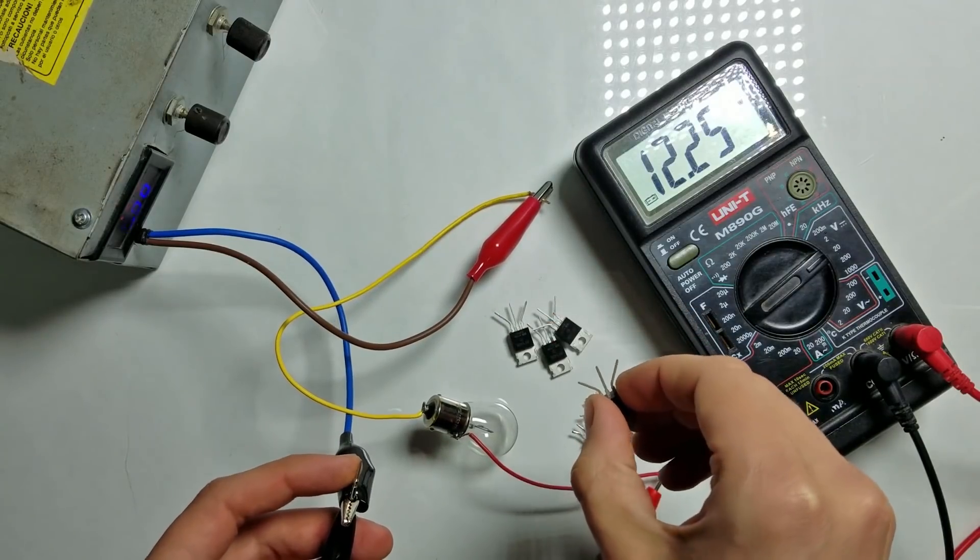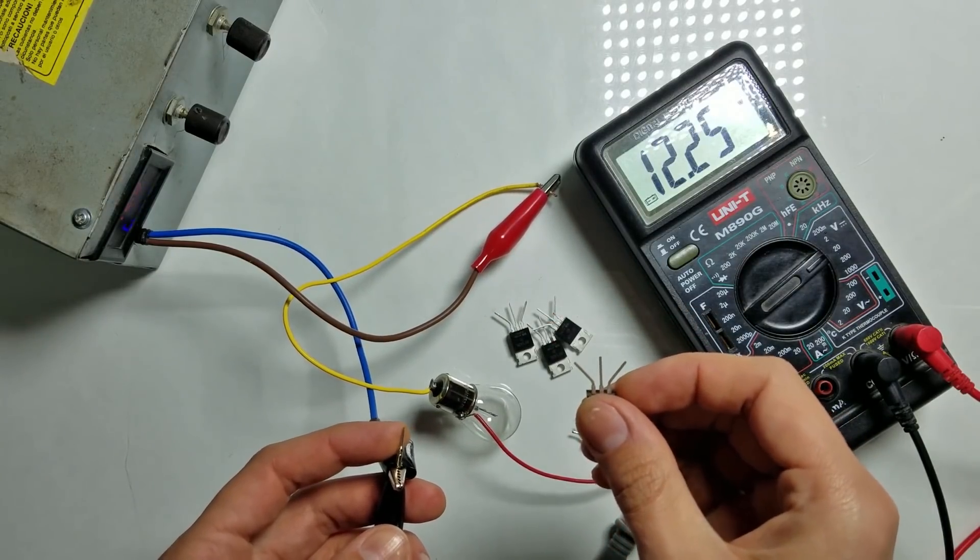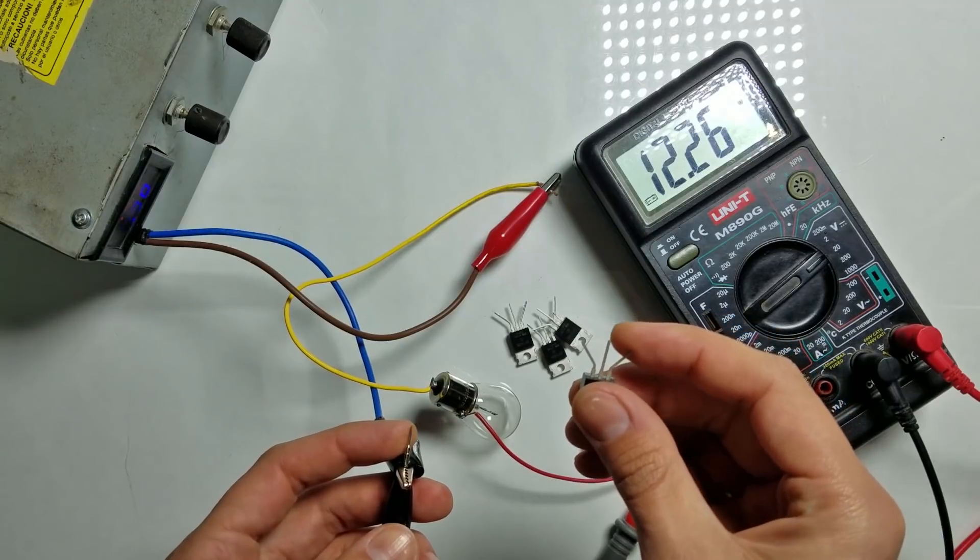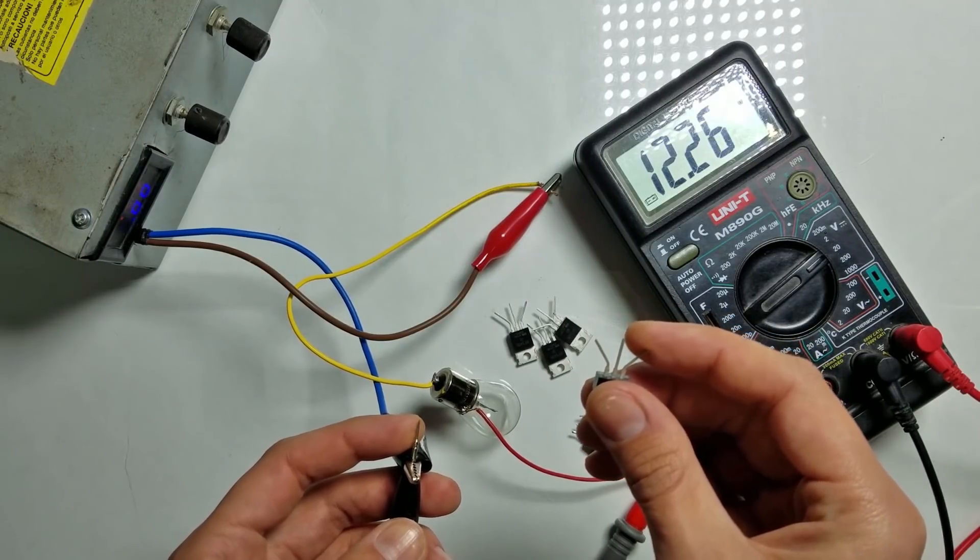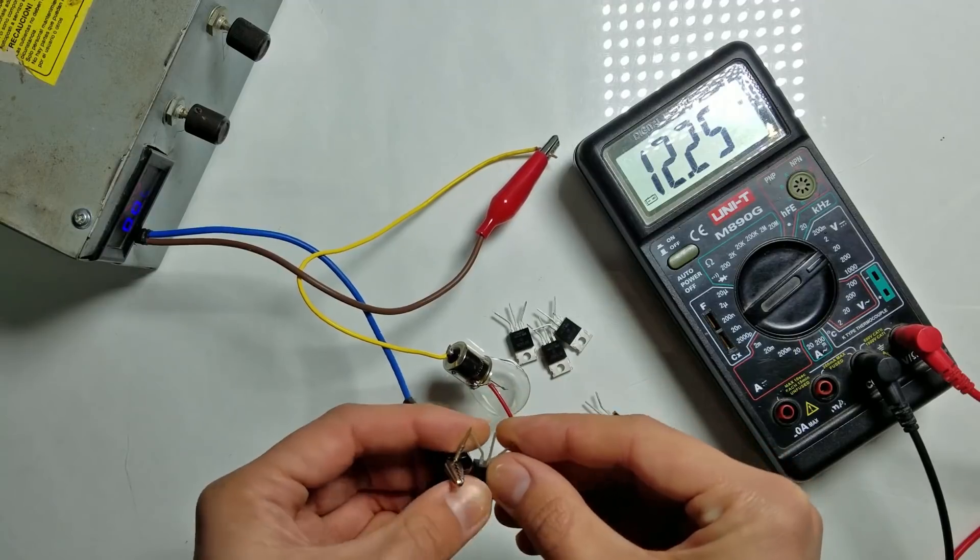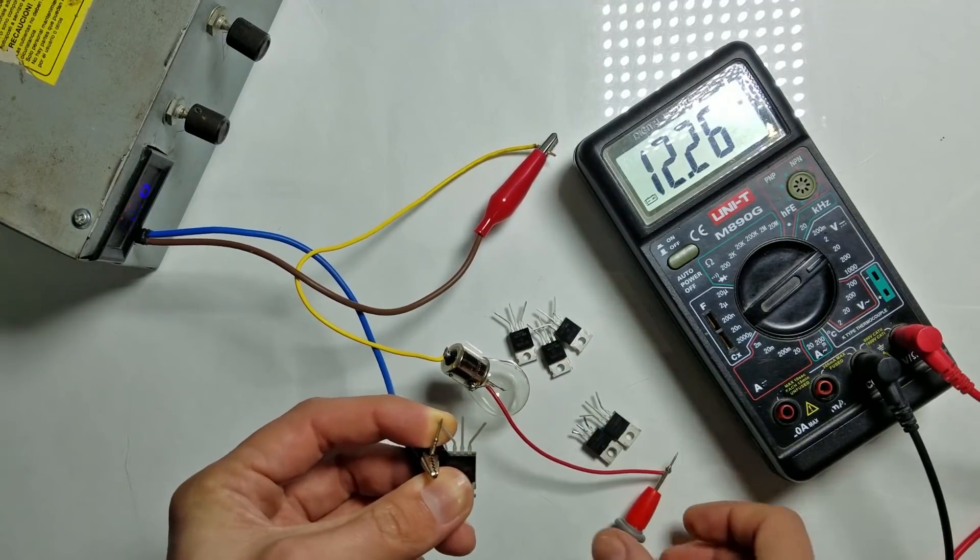I'll measure the voltage drop for each MOSFET when they are on. And since we also know the current, we can calculate drain to source on resistance and compare it to the datasheet. So let's do it.